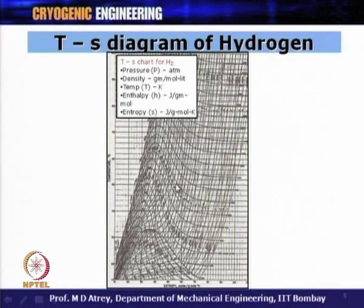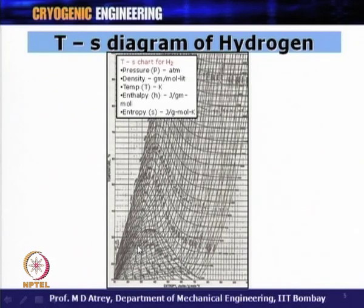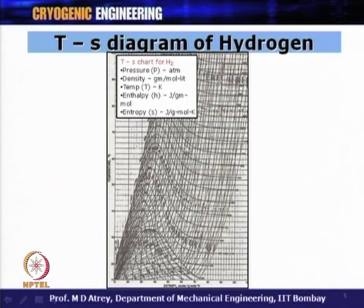The temperature-entropy (T-S) diagram of hydrogen is fundamental for cryogenic engineers to understand property variations with temperature. On the y-axis is temperature and on the x-axis is entropy. The dome represents the two-phase mixture region of liquid plus vapor. The lines from top to bottom are isobaric lines (constant pressure), and the curved lines are isenthalpic lines (constant enthalpy). These diagrams will be used in every problem when studying liquefiers and refrigeration.